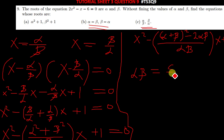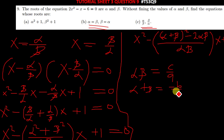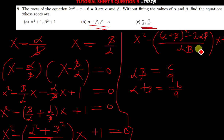Use the Vieta's formulas: αβ = c/a and α + β = −b/a. Substitute those values where α + β and αβ appear, and after replacing you find the quadratic equation required by this question. Thank you very much for watching today's tutorial video — see you in the next one.